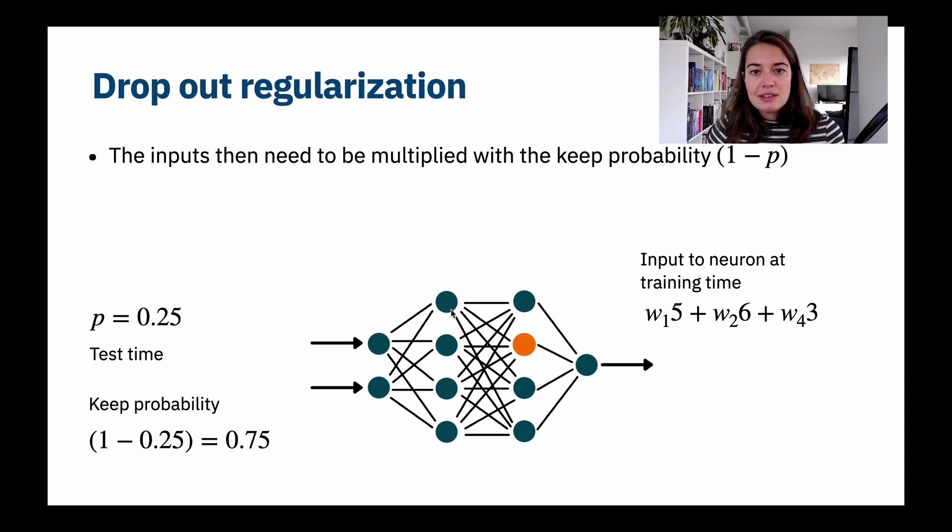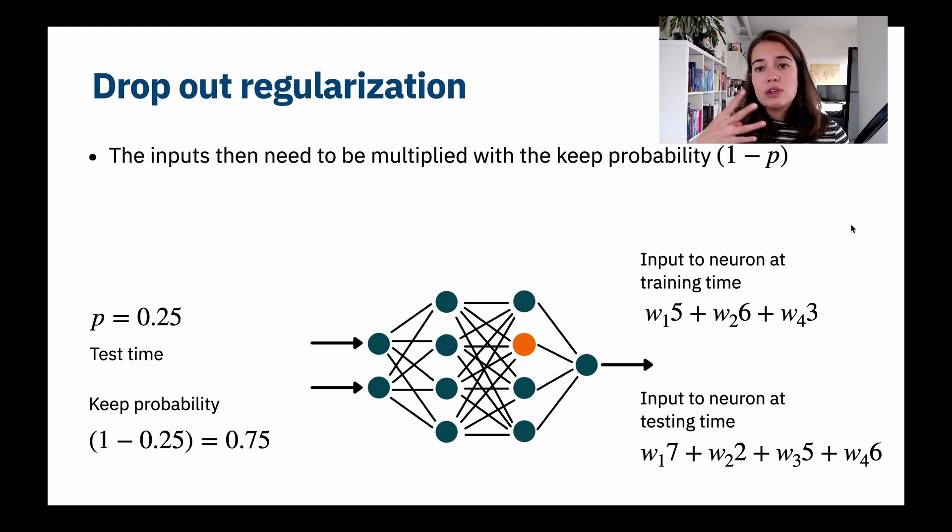But then on test time, because we have the whole network intact, no one is inactive, we will get four inputs. So we'll have some weight, some input, some weight, some input, etc. We're getting inputs from all of them. But if you do that you're going to get very different results because you were getting on average three inputs and now you're getting four inputs.